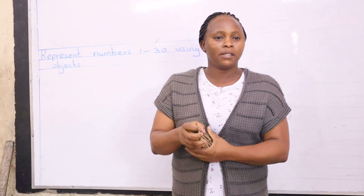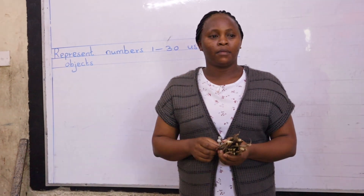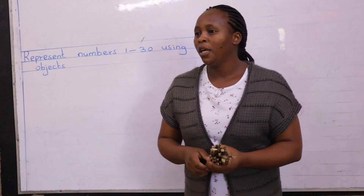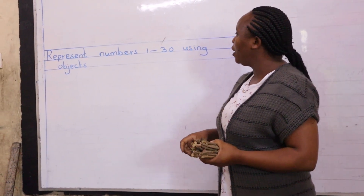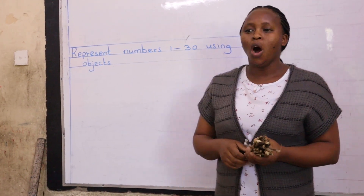Let us join Teacher Naomi's class to find out how someone counts objects up to number 30. Will you be able to count up to number 30? Good morning. Good morning, Teacher Naomi. And how are you? I'm fine. Welcome to class today. We want to learn math activities, and we are going to look at how to represent numbers 1 to 30 using objects.